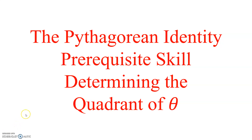In this video lesson we'll begin to look at the Pythagorean identity and begin to apply it. But before we can apply it, there's a particular prerequisite skill that you need, and that skill is determining the quadrant where theta would be located.